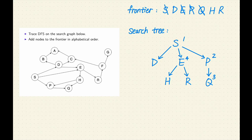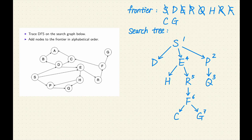There are three steps left. In step 5, we will expand R and add F to the frontier. In step 6, we will expand F and add C and G to the frontier. Finally, step 7. The most recent node added to the frontier was G. G is the seventh node expanded. Remove G from the frontier. G is a goal node. Let's return the path S, E, R, F, G as a solution.